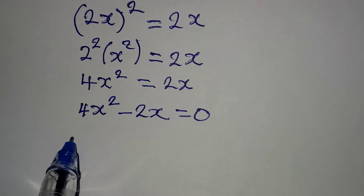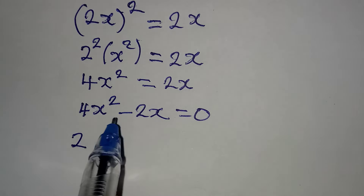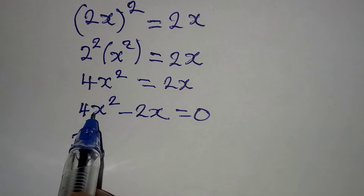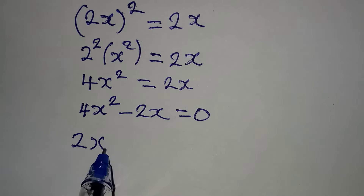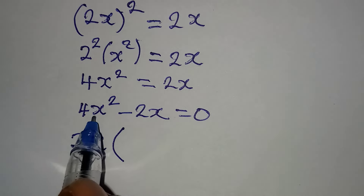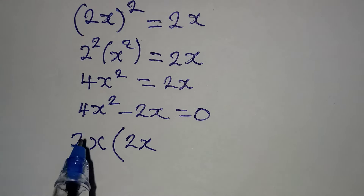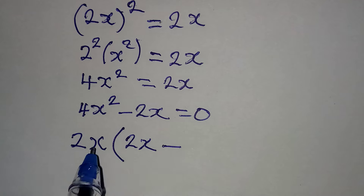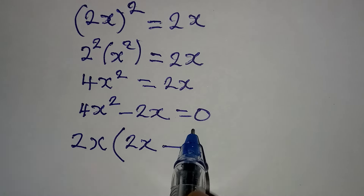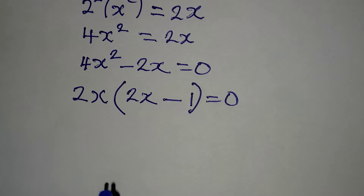We can solve this using the factorization method. We have a common factor of 2 and a common factor of x, so we pick out 2x. This gives 2x times (2x minus 1) equals 0, since 2x times 2x gives 4x squared and 2x times 1 gives 2x.